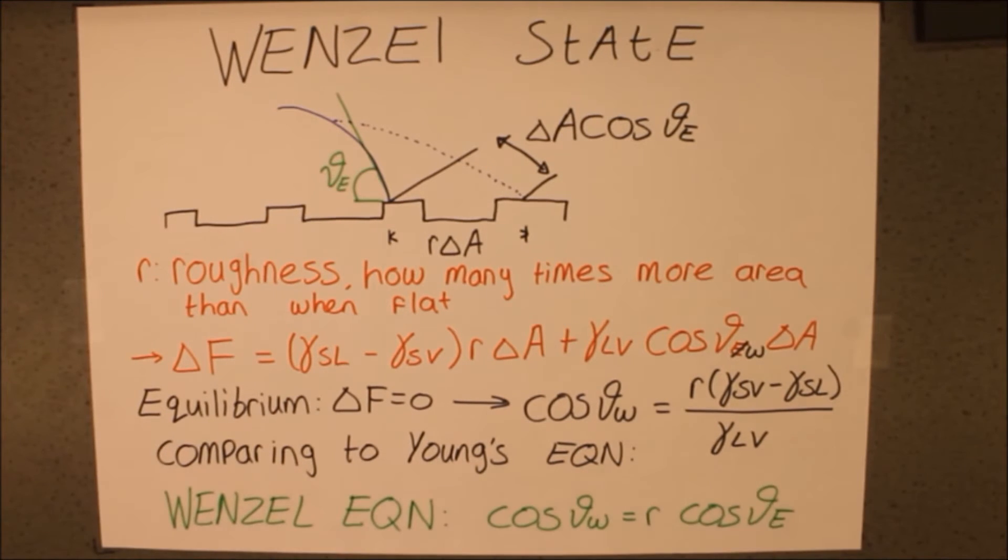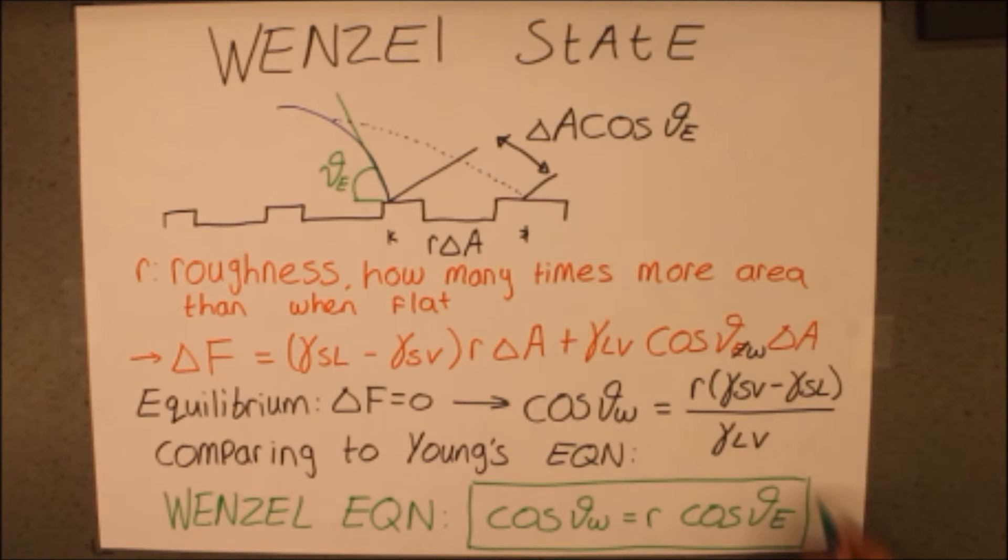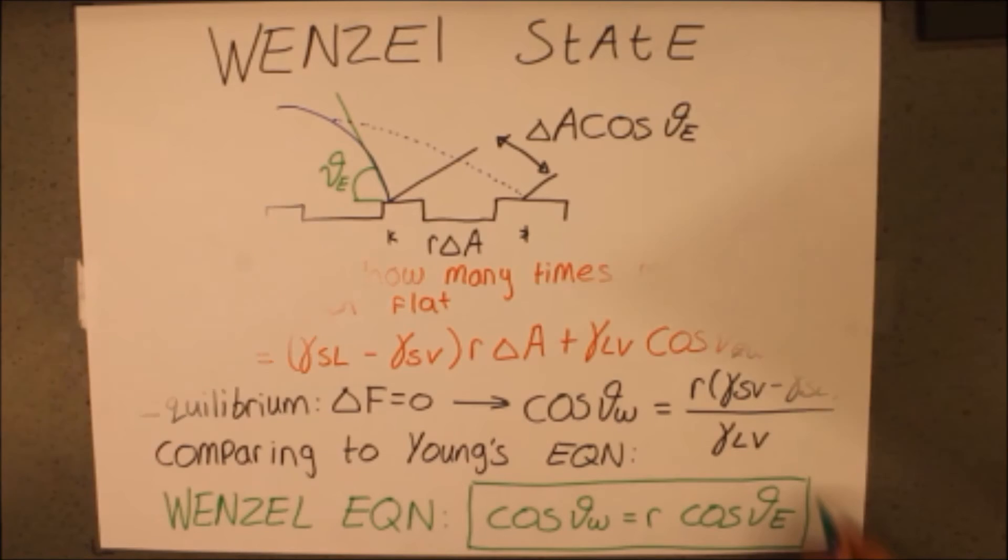This tells us that the roughness amplifies the equilibrium angle. Equilibrium angles smaller than 90 degrees get even smaller, and angles bigger than 90 degrees get even bigger. In this way, hydrophobic surfaces can become superhydrophobic by adding roughness.